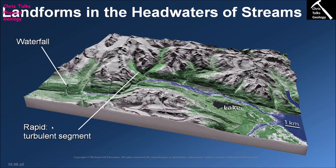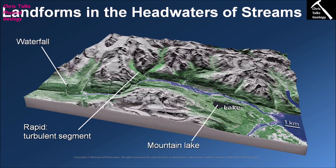Another feature commonly found in headwater environments is rapids, which result from the steep gradient. Because we have a steep gradient, the water is dropping very quickly and is very energetic. This energy gives the water the capacity to move a broad range of clast sizes, from very small clay-size clasts all the way up to boulders. The channel therefore contains extremely coarse sediment — boulders, cobbles, gravel, and sand. These obstructions create extremely turbulent flow, and these turbulent segments produced by a buildup of very large clasts are referred to as rapids.